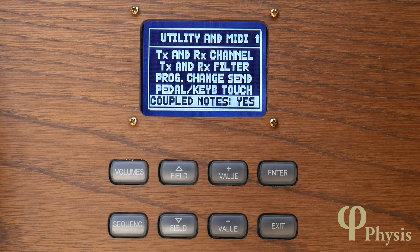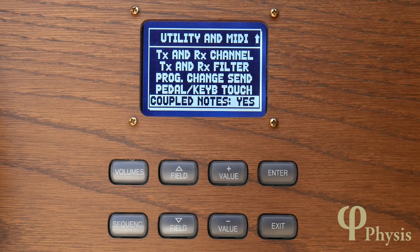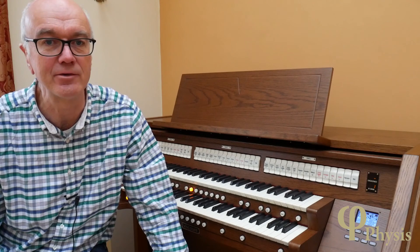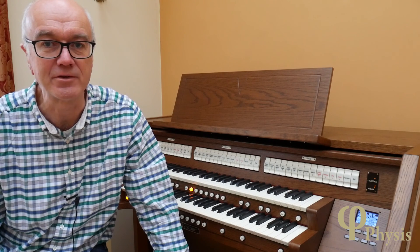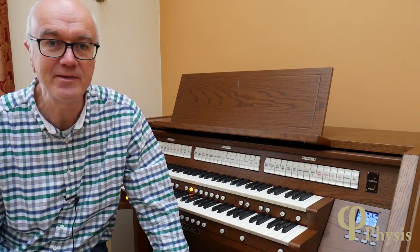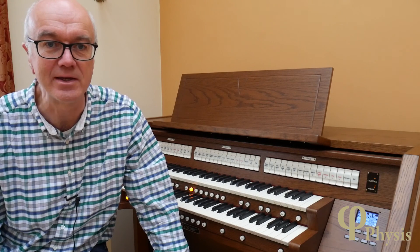The Coupled Notes function is next on the list. If set to no and a coupler is on — for example, Swell to Great — only the Great manual's note is transmitted along with a SysX message indicating that Swell to Great is active. If set to yes, the organ sends notes coupled on another manual as separate MIDI messages. On organs with super and sub-octave couplers, an all option allows octave coupled notes to be transmitted as well. This has been a short tour of the main MIDI configuration options on Viscount's Vysis-based organs. In practice you'll need to fiddle around a bit, but most common setup functions are accessible from the internal control panel.